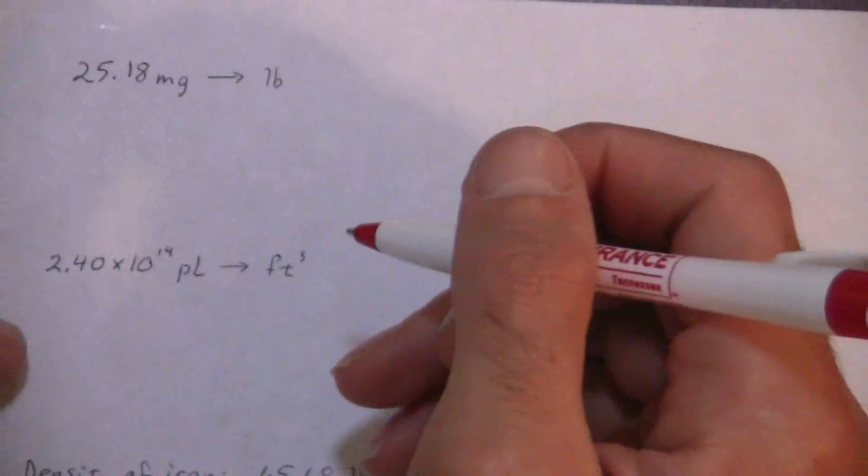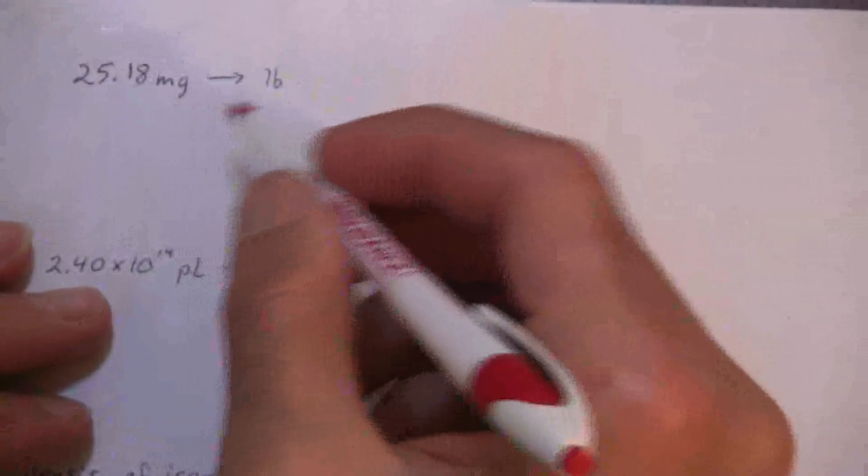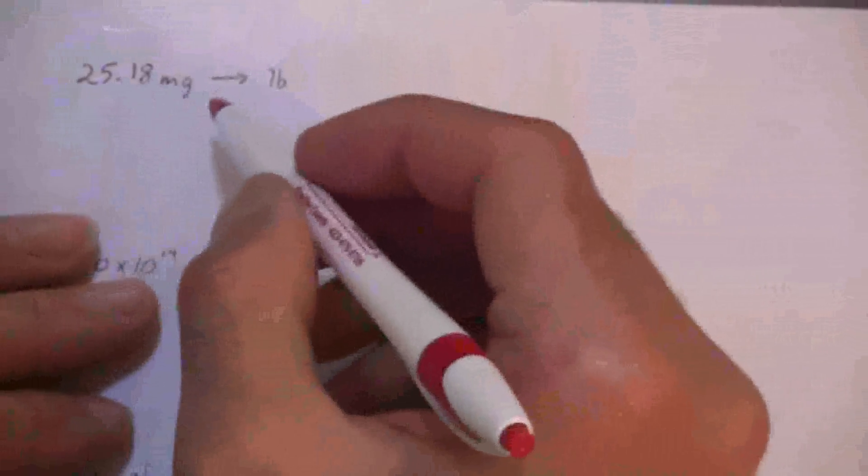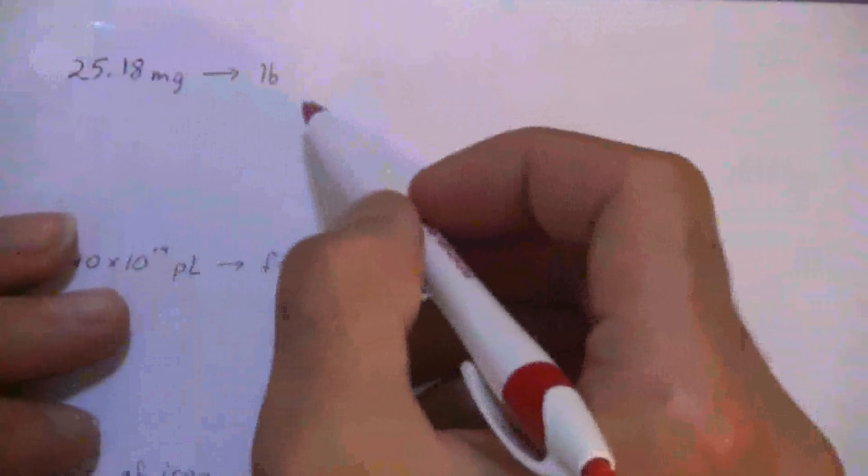All right, so I'm going to do a few problems with conversions that are a little bit more involved than the previous video that I did. So the first problem here, 25.18 milligrams and we want to convert that to pounds.